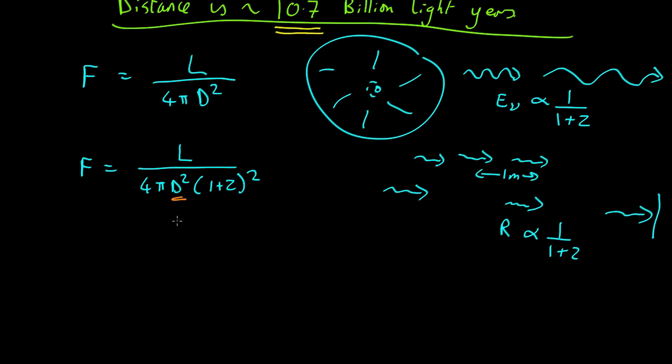So, we've got this. We can rearrange it. So, we get that the luminosity equals the flux times 4 pi d squared times 1 plus the redshift squared. And if you plug in the numbers, we know the flux, we know the redshift. That comes out at 3.4 by 10 to the 40 watts.